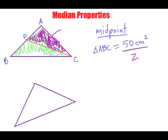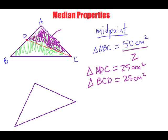Triangle ADC, not ABC, but ADC, this new half, is equal to 25 centimeters squared. This means that triangle BCD is also going to equal 25 centimeters squared.